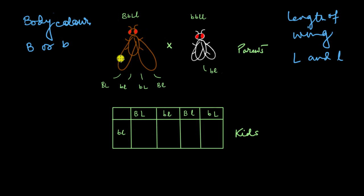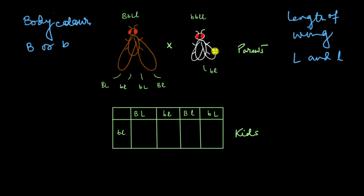He crossed this heterozygote with another fruit fly which was black in color and had really short wings. This fruit fly didn't show any dominant alleles, only the recessive ones. So this one was a homozygote that showed recessive features only. It was black in color and had really short wings.